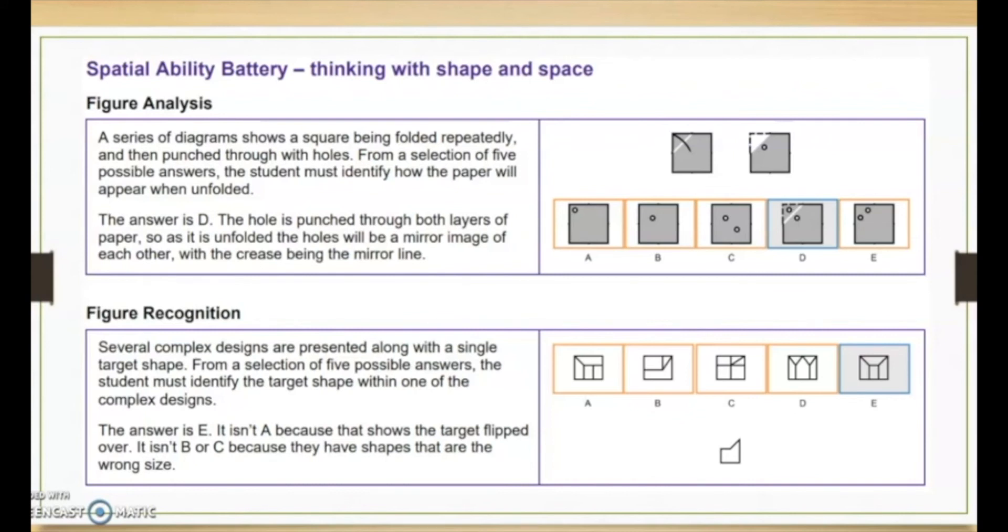And then the next example we see figure recognition. And you see the shape at the bottom right. The student, as it explains there, will be looking for the image where that shape fits into exactly. And that is E as it is the only one where the shape at the bottom there actually slots into E there. And again you can just pause that if you'd like to read the bit on figure recognition.